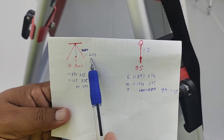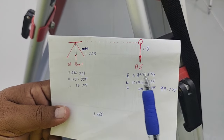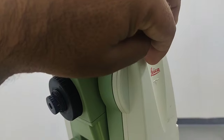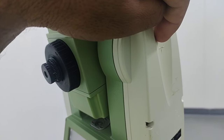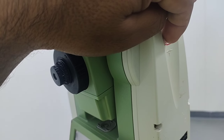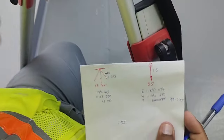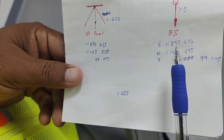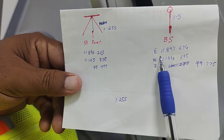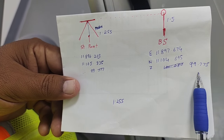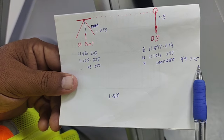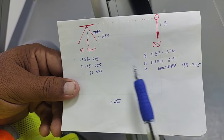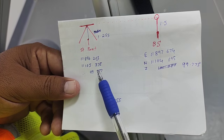In this case, we already measured our height of instrument at 1.255 meters — this is from the floor up to the instrument point. So that is our height of instrument. There is also our backside point, and the backside elevation is 99.775. Using these two coordinates I can set my total station as per our requirement.